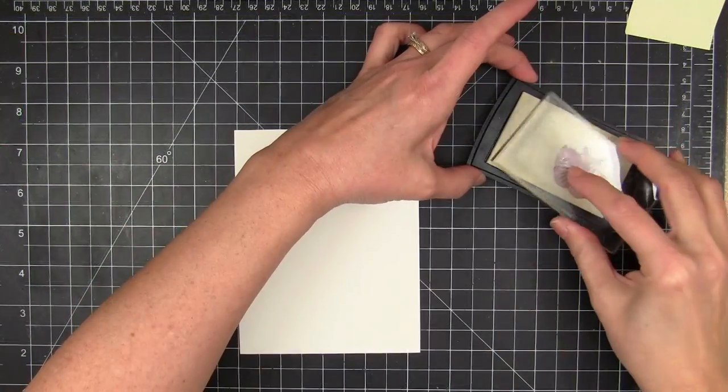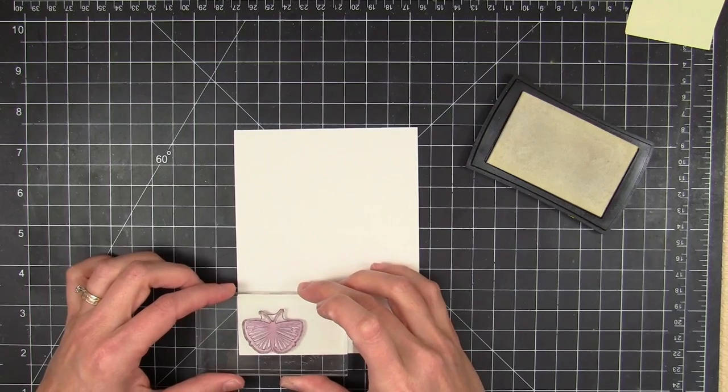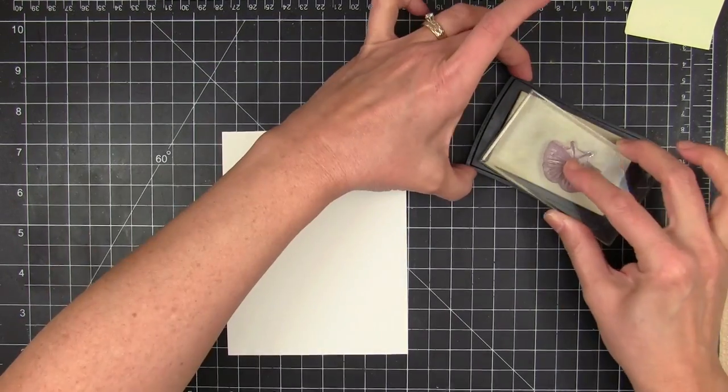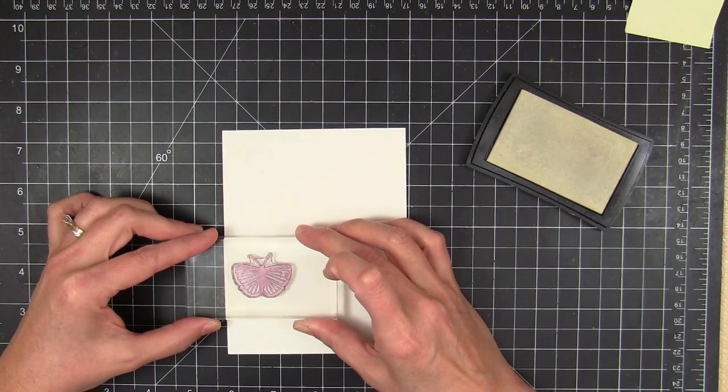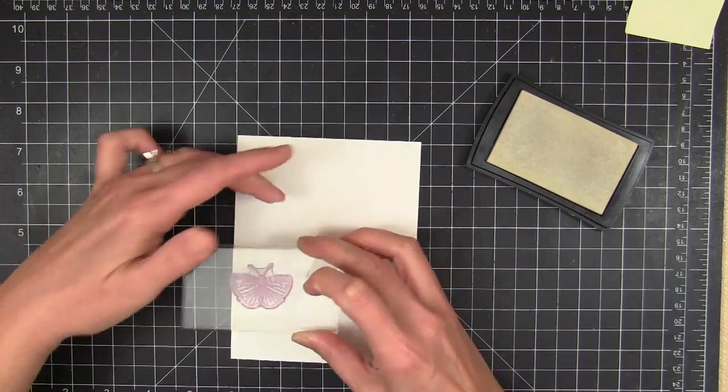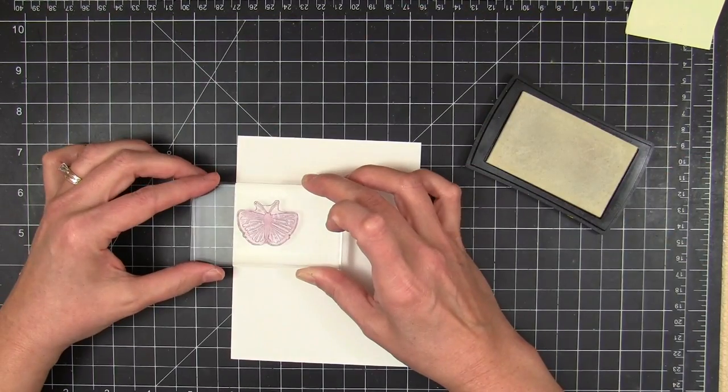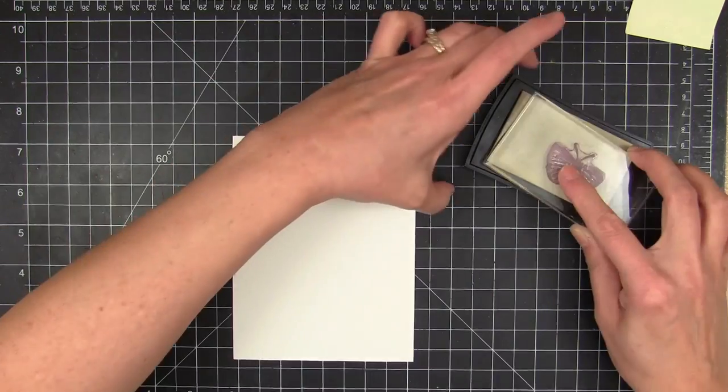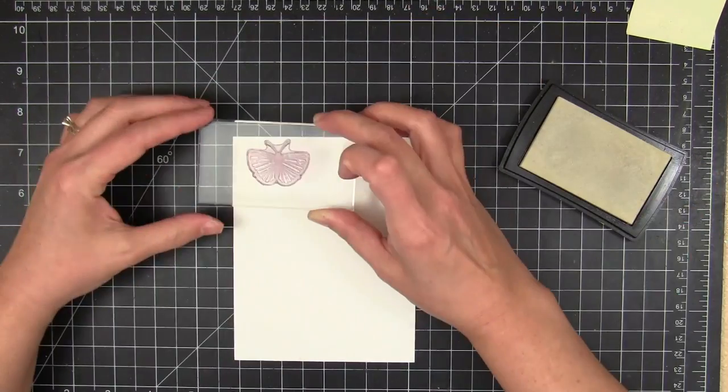And this went so much faster than any other method of gluing down lots of die cuts that I've ever used. And so from now on, that bottle of Elmer's spray adhesive is my best friend.